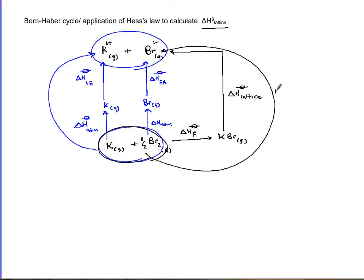So I'm going to call this route or path number one, and say this pathway or route is equal to route number two, the blue.